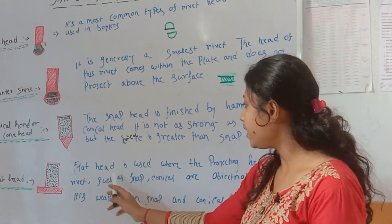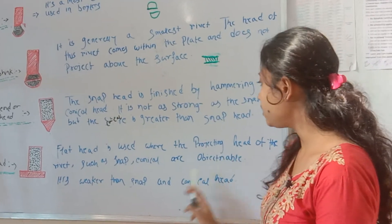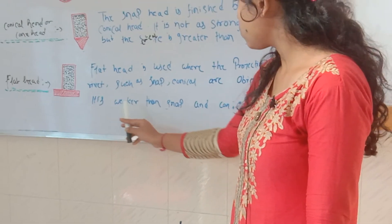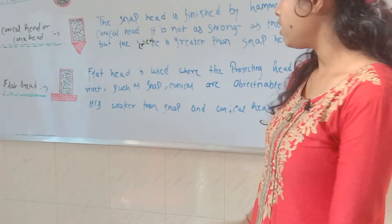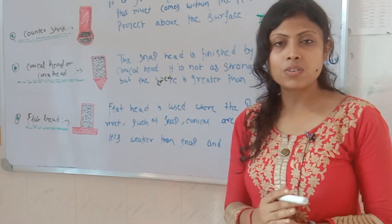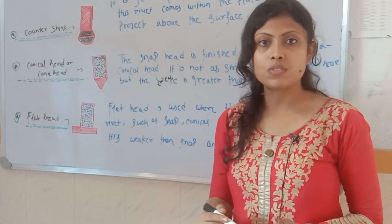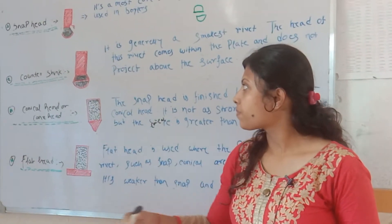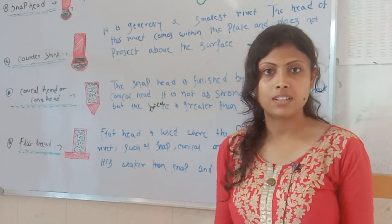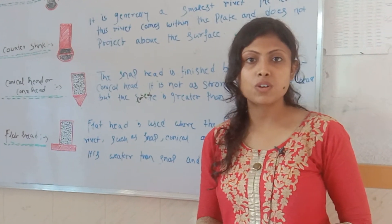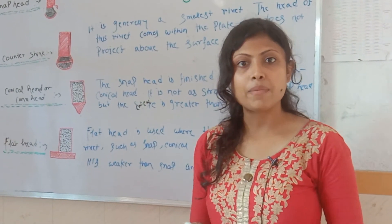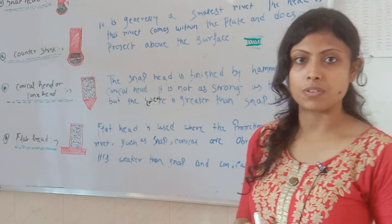Flat head is used when the projecting head of the rivet head — such as snap head and conical head — are objectionable. It is weaker than the snap head and conical head. Whenever you are using conical head, snap head, or countersink head, you can also use flat head.